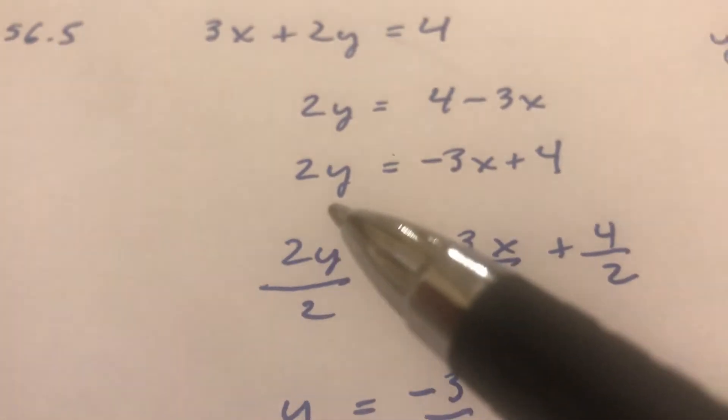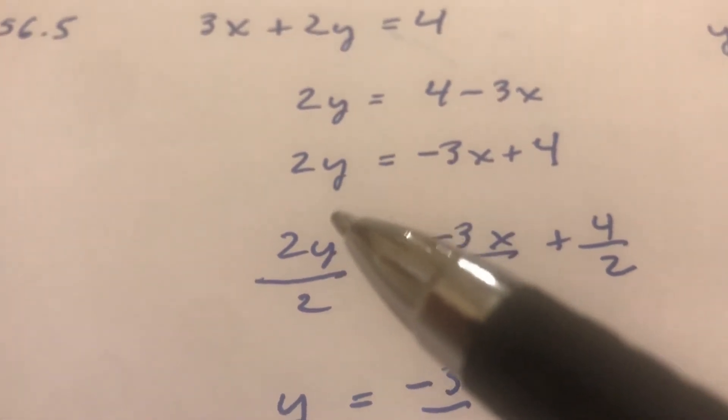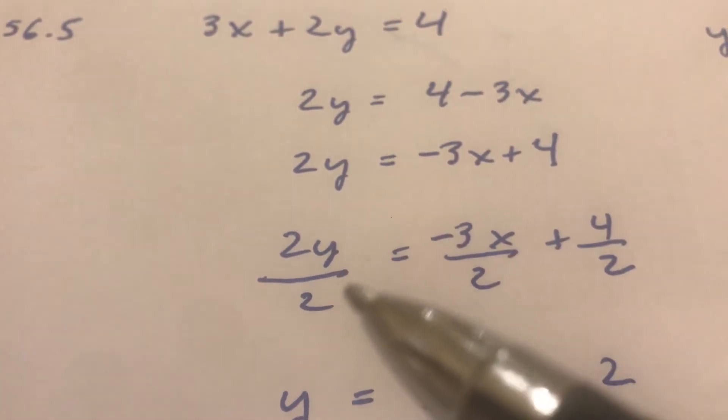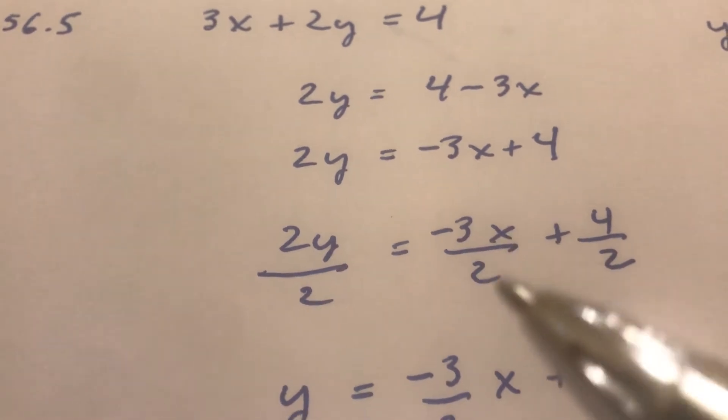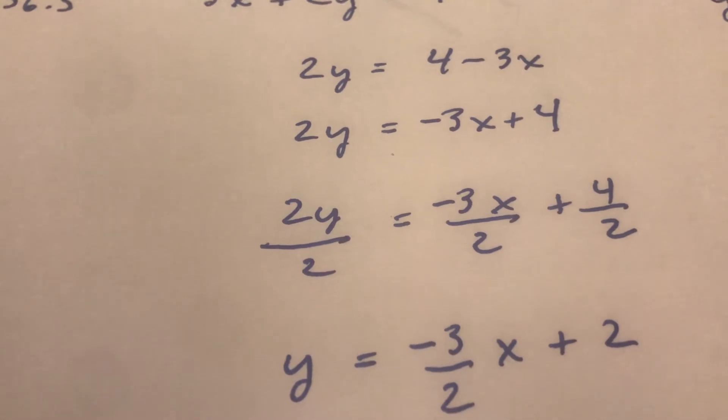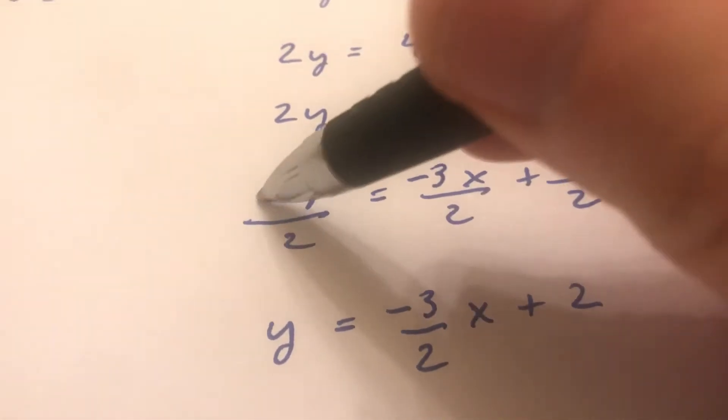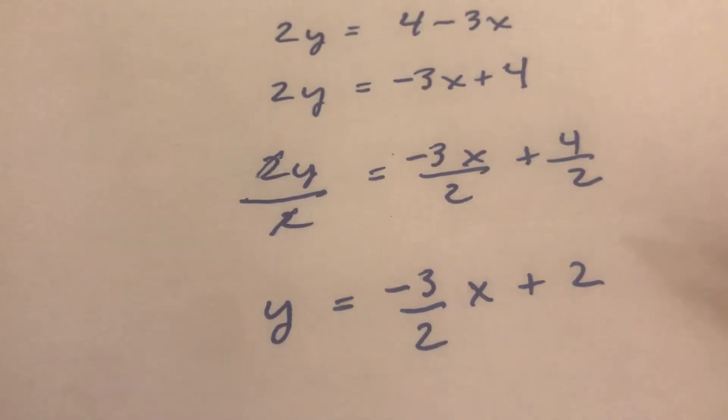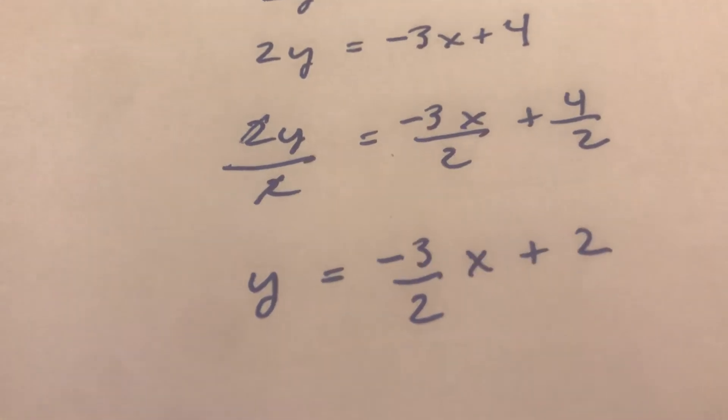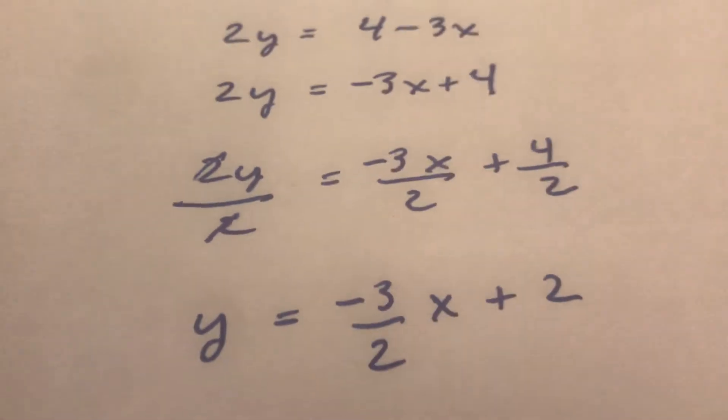So I still don't have y by itself - I have 2y equals negative 3x plus 4, it's multiplied by 2. So what I have to do is divide each side by 2. I'm going to divide each term by 2. I could divide the whole side by 2 but it makes it a little bit more difficult to simplify. So I divide each term by 2 and I can cancel out the 2's and I'm left with y and then negative 3x over 2 and 4 over 2 is 2. So now I got y all by itself - that was my goal.